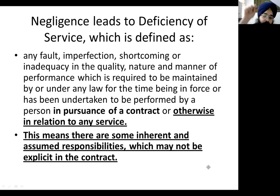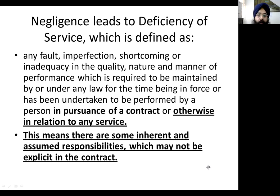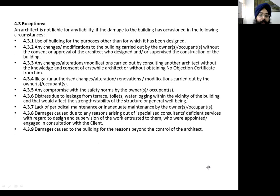The architect is responsible even for things not explicitly written in the contract. For example, it is the architect's job to make calculations and drawings — these things may not be written in the contract but are deemed to be part of professional duties. This means there are inherent and assumed responsibilities which may not be explicit in the contract.